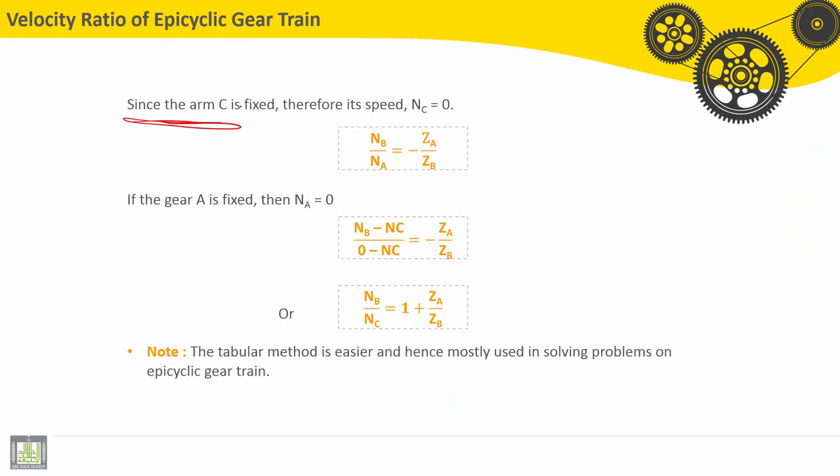Since the arm is fixed, NC is equal to zero, and then NB divided by NA is equal to minus ZA divided by ZB.